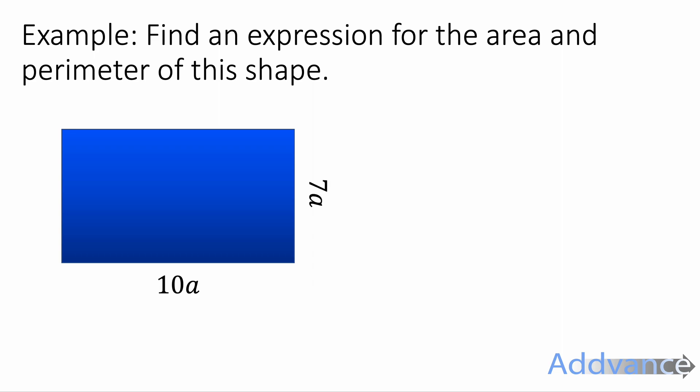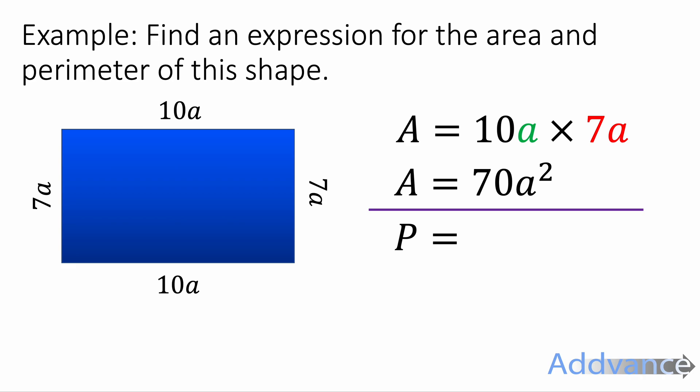Here's a nice interesting example. Find an expression for the area and perimeter of this shape. Before we begin, we need to realize that the bottom is 10a, so the top is also 10a, and the side is 7a, and the opposite side will also be 7a, because that's how rectangles work. To find the area, we're going to do the base times the height. The base is 10a, the height is 7a. 10a times 7a. 10 times 7 will be 70, a times a will be a squared. We can do the perimeter now. To find the perimeter, we're going to add all the sides together. So we'll do 10a plus 7a plus 10a plus 7a. And that will be 34a.